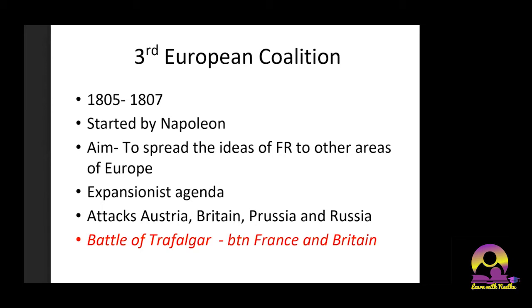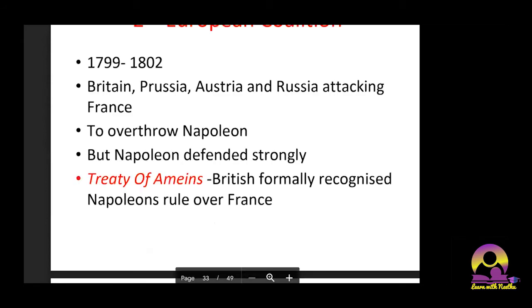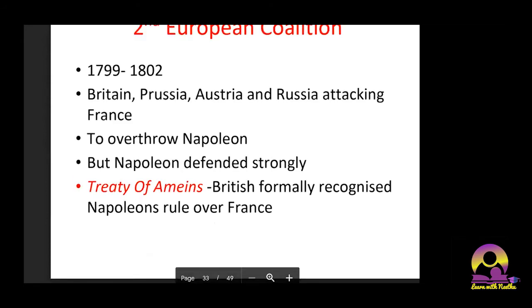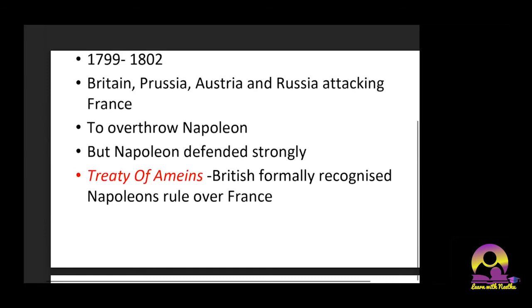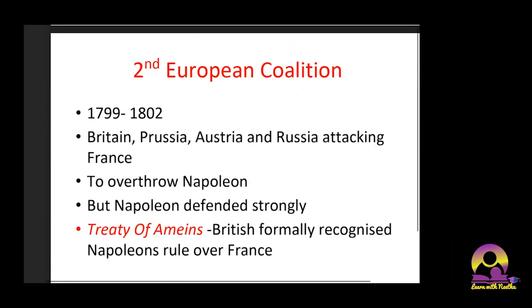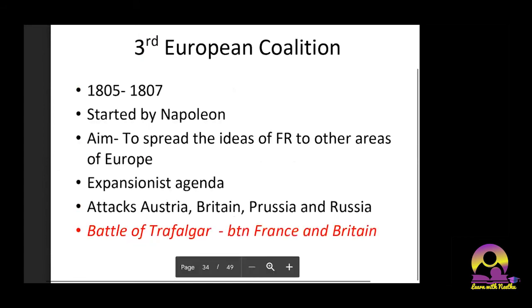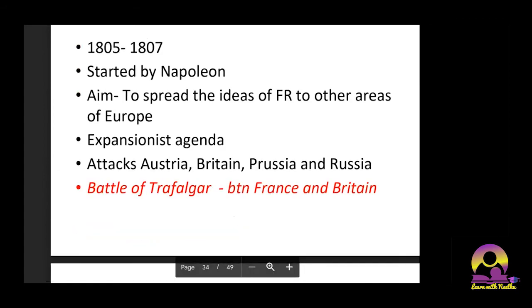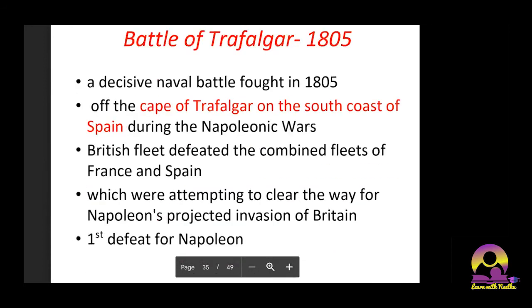France attacked Austria, Britain, Prussia, and Russia. The Battle of Trafalgar then happened between France and Britain. In the second coalition, Britain had formally recognized Napoleon's rule, but now the opposite was happening. In the Battle of Trafalgar, Napoleon was defeated. The battle was fought in 1805 — it was a decisive naval battle.